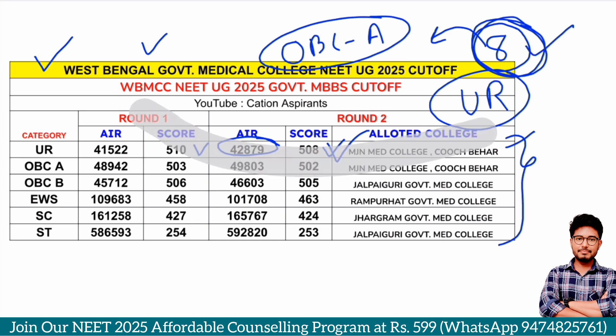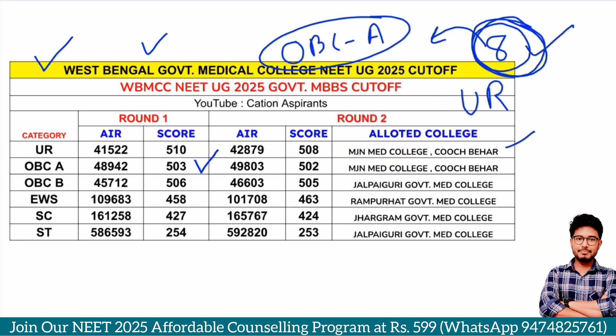OBC category Round 1 cut-off is 503 marks, and Round 2 is 502 marks. The allotted college is Maharaja Jitindra Medical College. OBC-B category Round 1 cut-off is 506 marks, and Round 2 cut-off is 505 marks. The allotted college is Jalpaiguri Government Medical College.